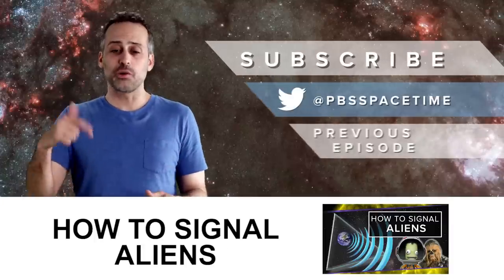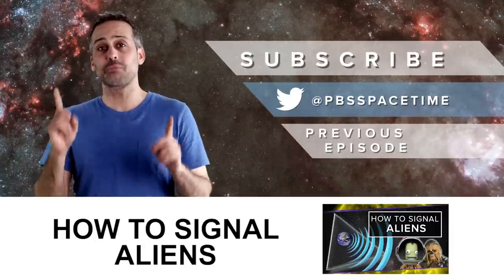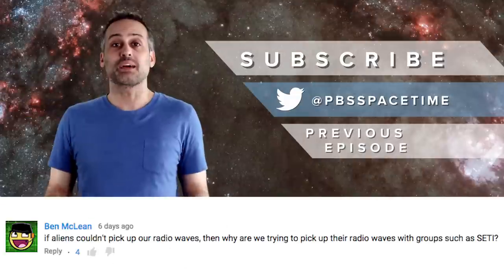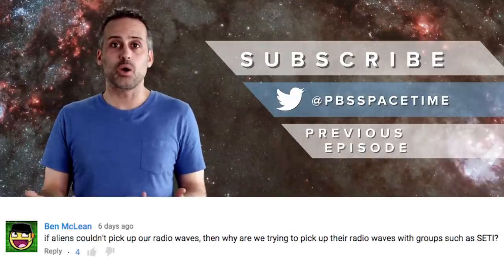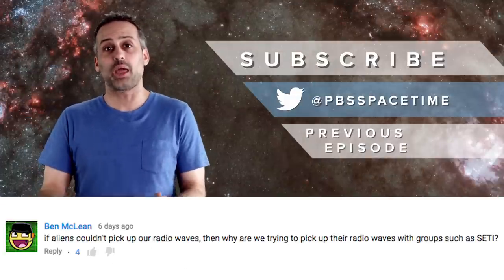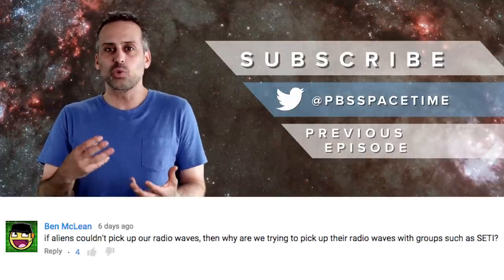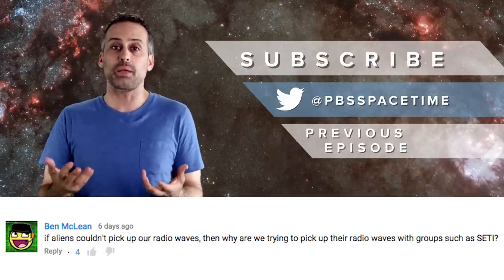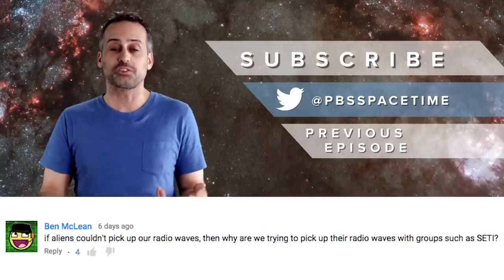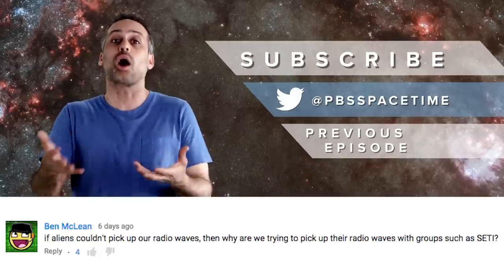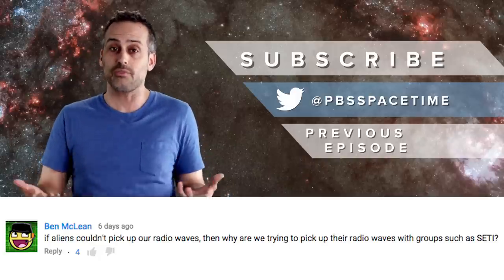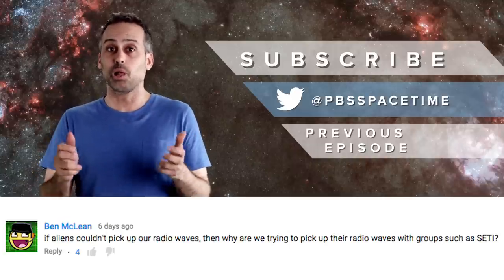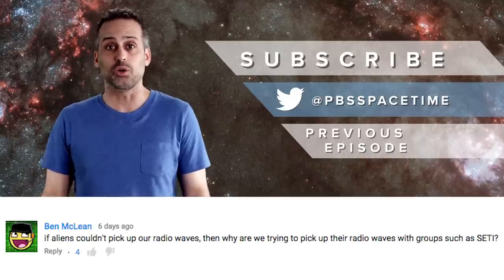Last week, we talked about different possible ways to signal aliens, including maybe putting planet-sized geometric objects in orbit around the sun. Here are some of your comments. Ben McLean asked, if aliens can't pick up our radio waves, then why are we trying to listen for alien radio waves with SETI? Well, aliens wouldn't be able to pick up our stray radio waves easily, but they would be able to pick up a beacon. And the operating assumption of SETI for several decades is that maybe aliens are broadcasting such a beacon into space. However, they might be using optical laser pulses if they have limited resources, or the kind of alien billboards that we discussed in the episode. Who knows?